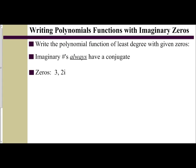In this video, we're going to look at how to write polynomial functions when given imaginary zeros. We're going to apply the complex conjugate theorem we learned in a previous video. So we want to write the polynomial function of least degree with the given zeros. Remember, imaginary numbers always have a conjugate, so imaginary zeros come in pairs.